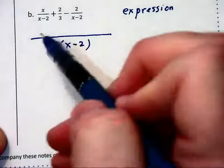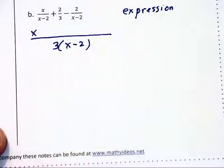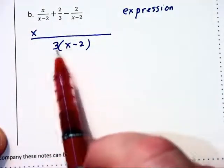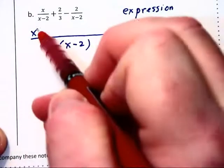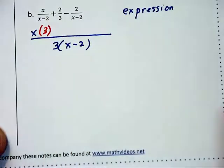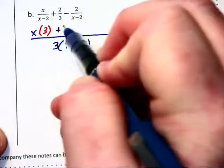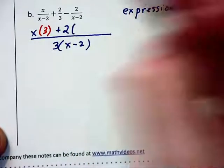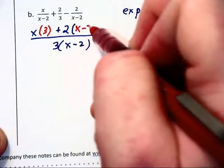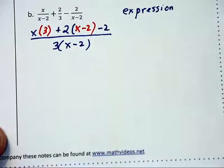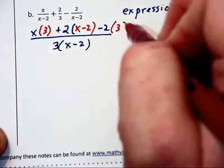The first fraction had an x up in the numerator. To go from (x - 2) to 3(x - 2), the denominator was multiplied by 3, so the numerator is going to get multiplied by 3. In the second fraction, we had a 2 in the numerator. It needs to be multiplied by (x - 2). And then we've got a -2 in the third fraction, which needs to be multiplied through by 3.